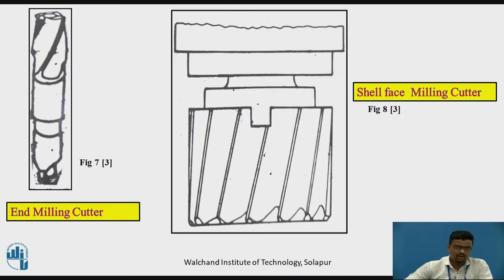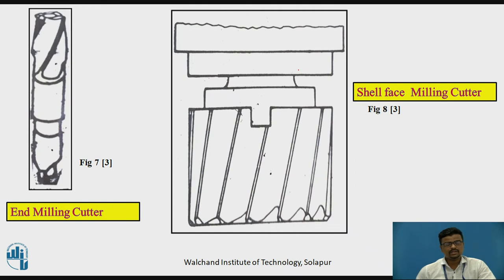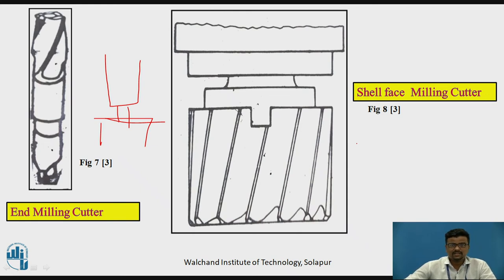Next is the end milling cutter. For example, if you want to provide a drilling operation on an irregular workpiece such as a rectangular plate, you can use the end mill cutter. You fix the end mill cutter in the arbor or spindle to perform drilling or facing operations. There is also another diagram for the shell face milling cutter, which can be used for face milling operations on large surfaces in very little time.